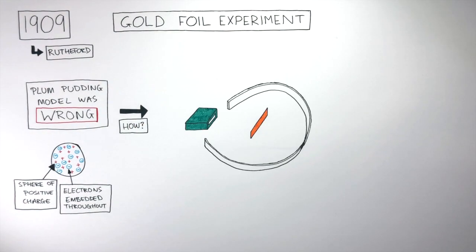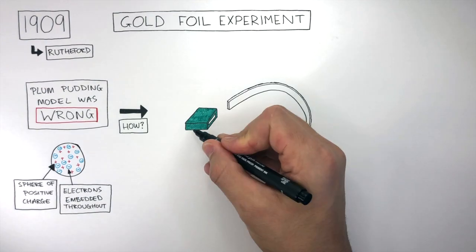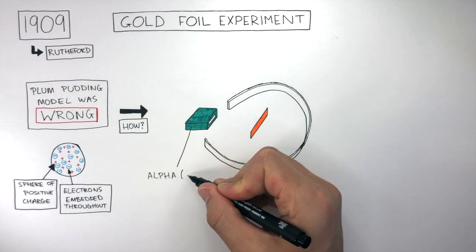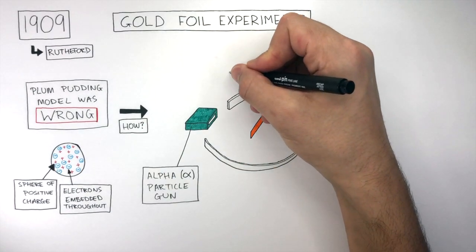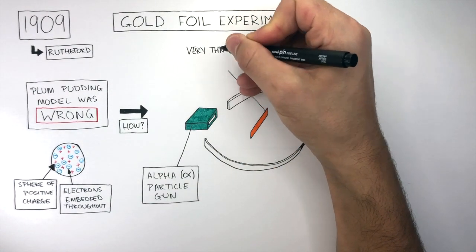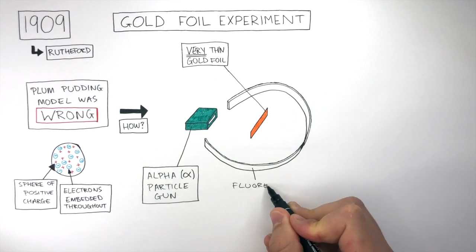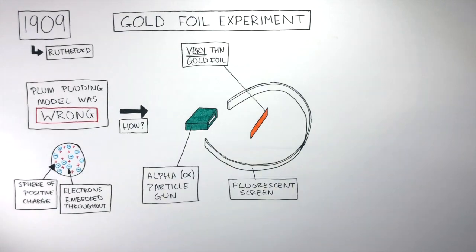The gold foil experiment would have looked something like this. It consisted of an alpha particle gun, a piece of very thin gold foil, and a fluorescent screen.